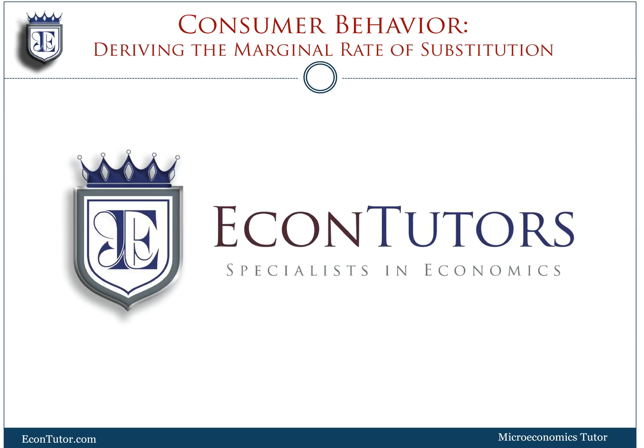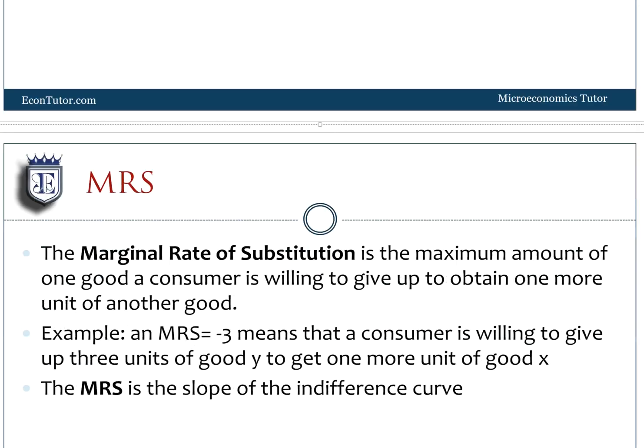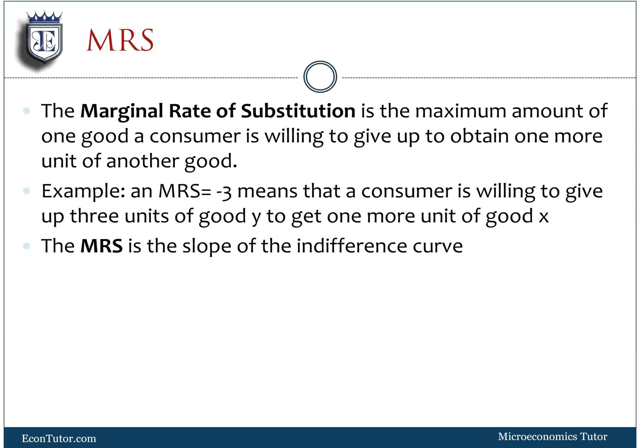This is our tutorial on deriving and understanding the marginal rate of substitution. We use calculus to derive what MRS is, and then we explore the different types of preferences expressed by different types of indifference curves. The marginal rate of substitution is the maximum amount of one good a consumer is willing to give up to obtain one more of another good — the sacrifice of good Y to get one more unit of good X.